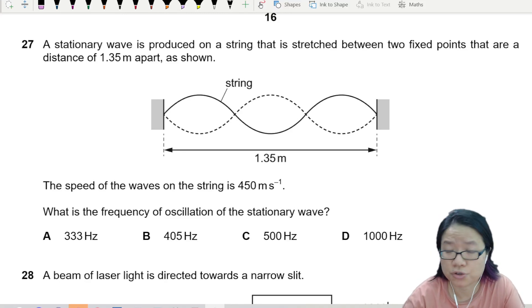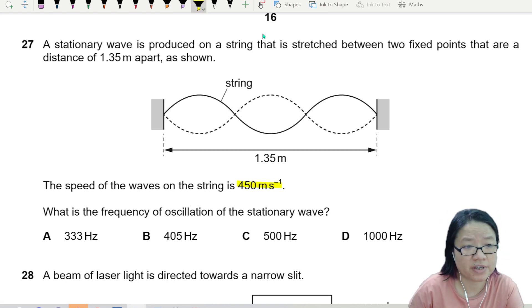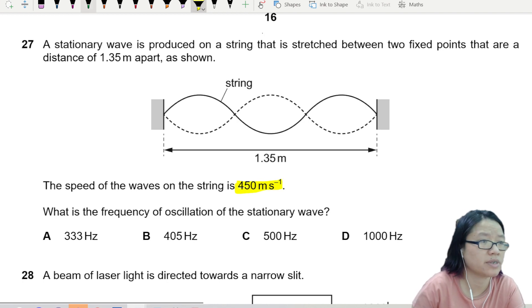Okay, so this question is another stationary wave question. A wave is produced on a string that is stretched between two fixed points that are 1.35 meters apart. The speed of the waves on the string is 450 meters per second, so this is v.